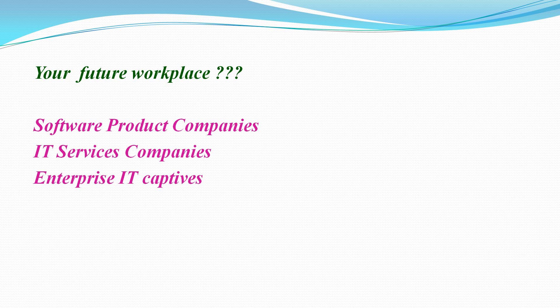The three types are: Software Product Companies, IT Services Companies, and Enterprise IT Captives. So if you want to become a Software Engineer, you have to work in any one of these types of companies.